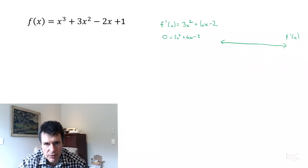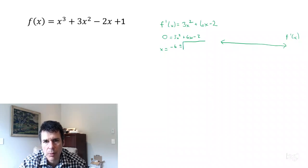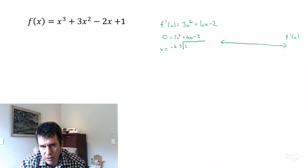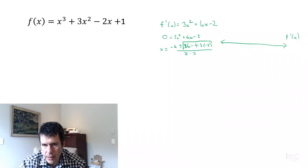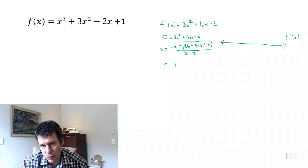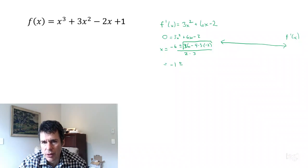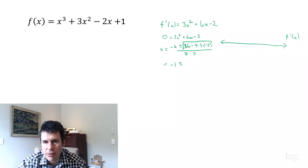I'm going to use the quadratic formula. So x equals negative b, negative 6, plus or minus the square root of b squared minus 4ac — that's 36 minus 4 times 3 times negative 2 — all divided by 2a. So that's negative 6 over 6, which is negative 1, plus or minus the square root of 36 plus 24, which is 60. Since 60 equals 4 times 15, that gives us 2 root 15 over 6, simplifying to root 15 over 3.